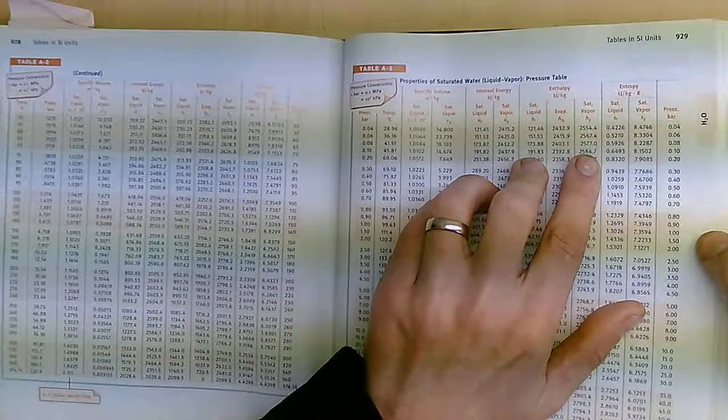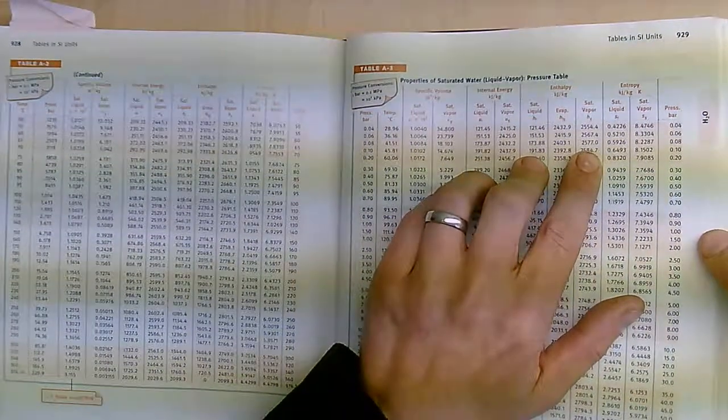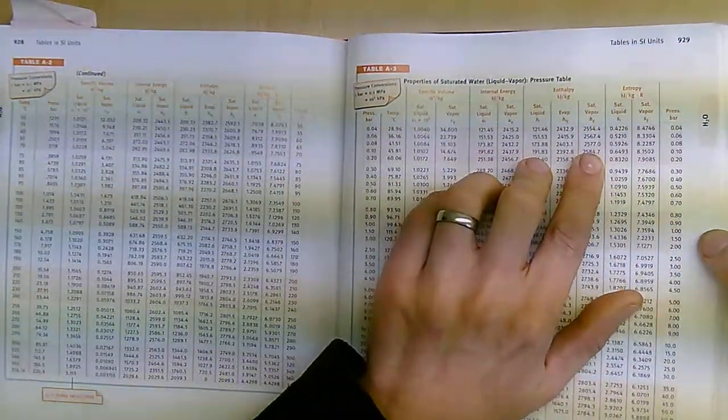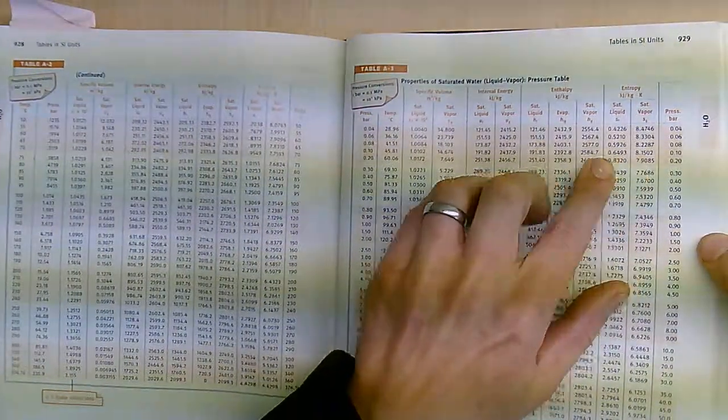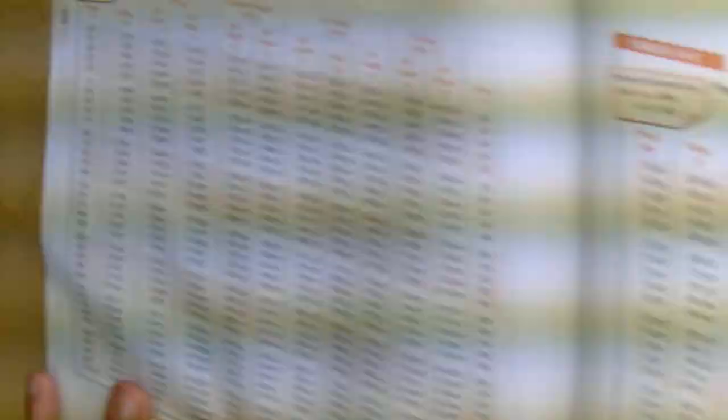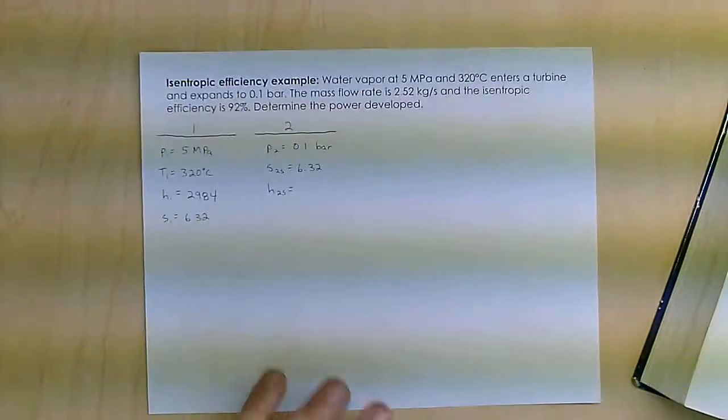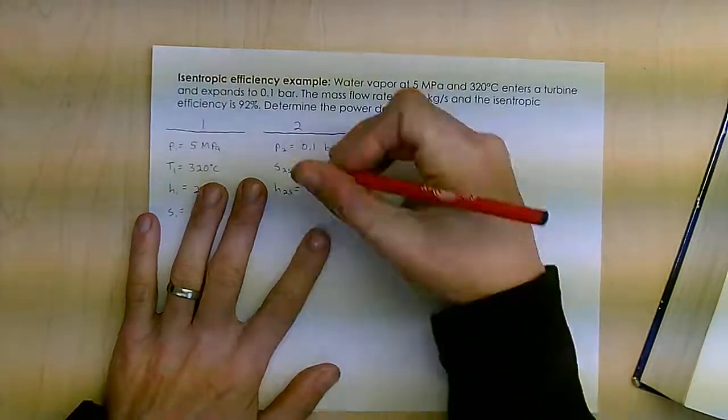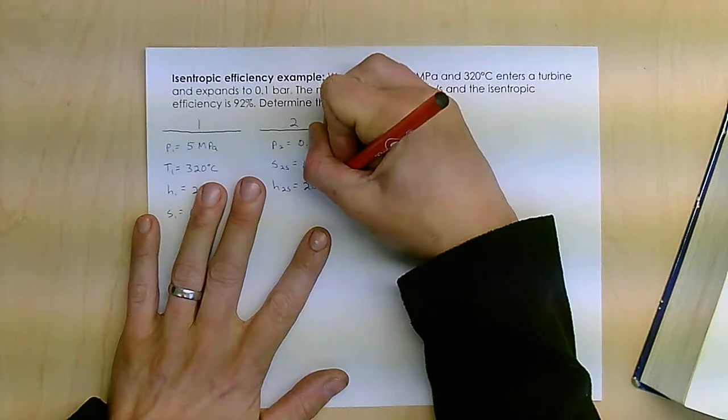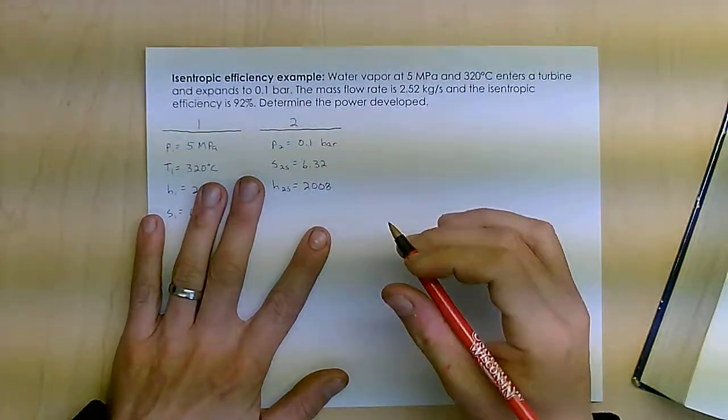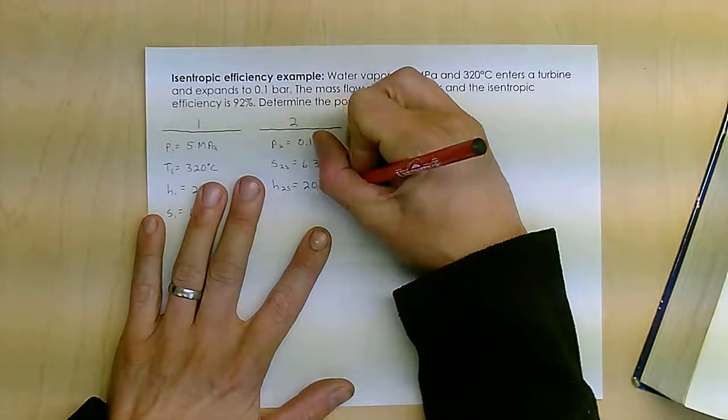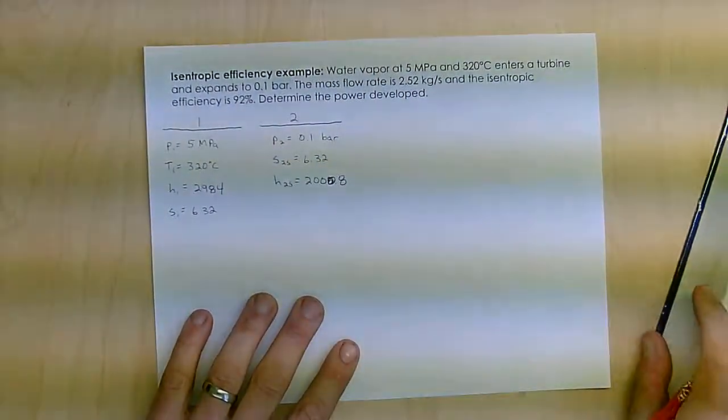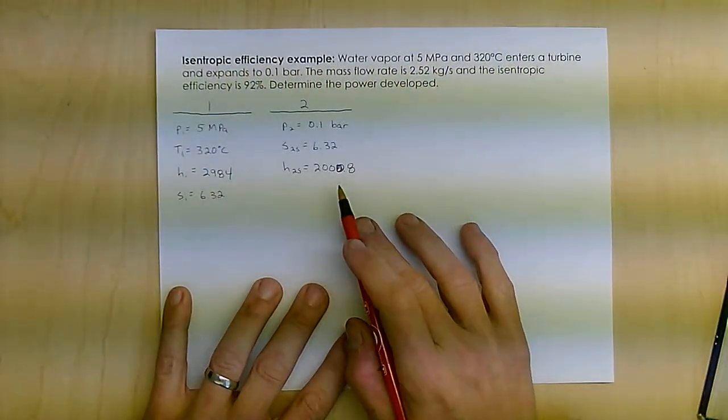For the enthalpy, which gives me about 2000, to be exact, it's 2000.8 kilojoules per kilogram. So I'll let you interpolate, knowing my entropy, what my enthalpy will be. This is the best-case scenario. So if that turbine is completely reversible, I get 2000.8 for my final H value.